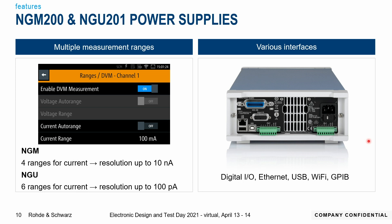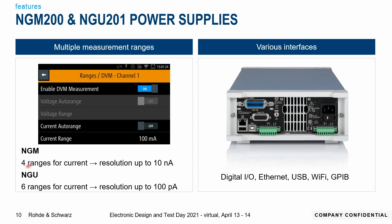You also need to characterize very small sleep currents as well as currents that might be several amps. Multiple measurement ranges within the NGM and NGU ensure accurate measurements across that full range. The NGM has four current measurement ranges with a resolution down to 10 nanoamps, and the NGU is even more accurate with six ranges and a resolution down to 100 picoamps.